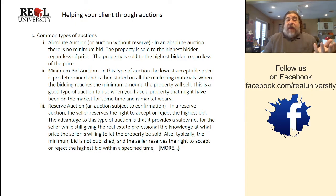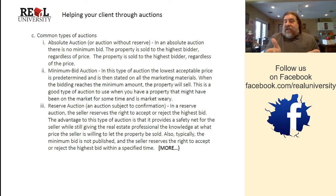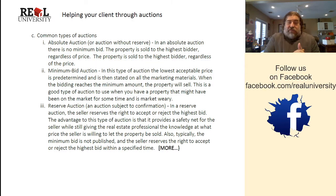If they don't reach the minimum — say bidding stalls at $110,000 — the auctioneer may say they haven't reached the minimum bid yet and that they need to keep going or the house will be taken off the auction block.